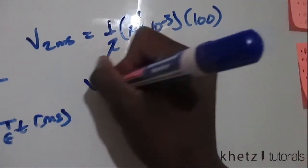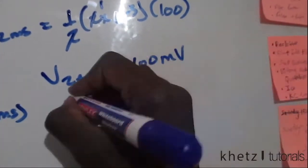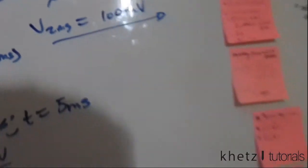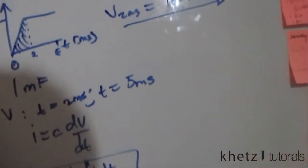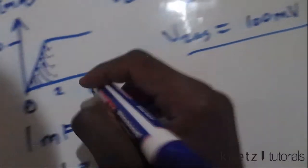That cancels out to one, which means v at two milliseconds equals 100 millivolts. That is the answer. Moving on to the second part, we're finding v at time equals five milliseconds, which is somewhere over here.